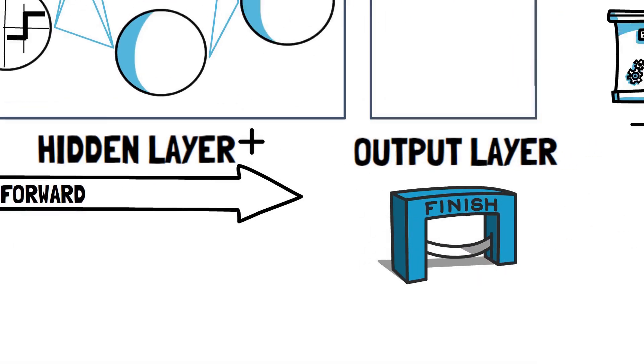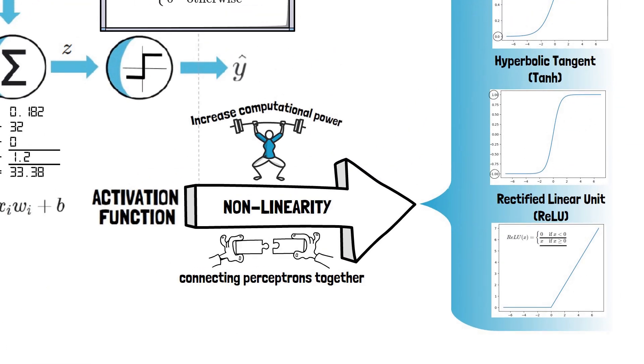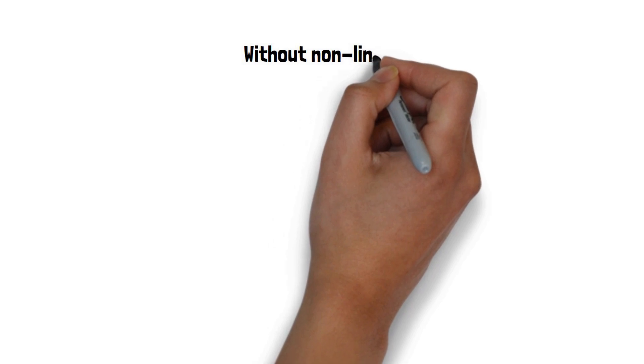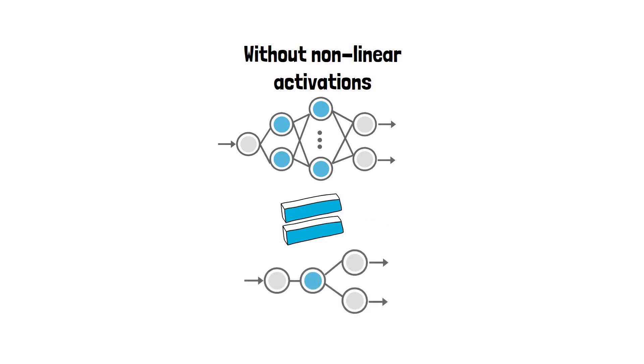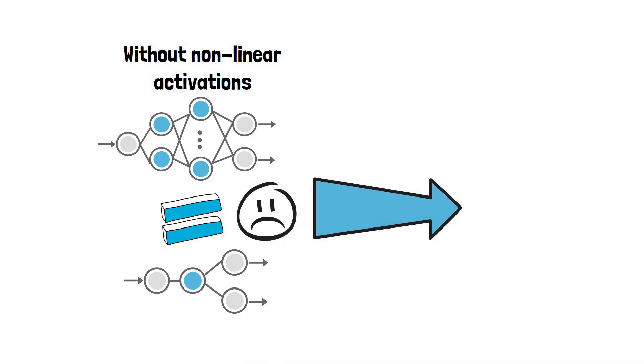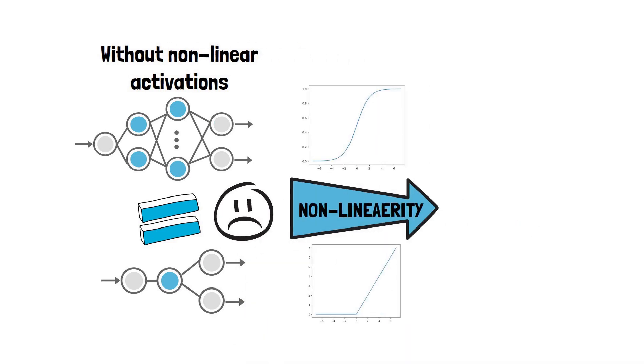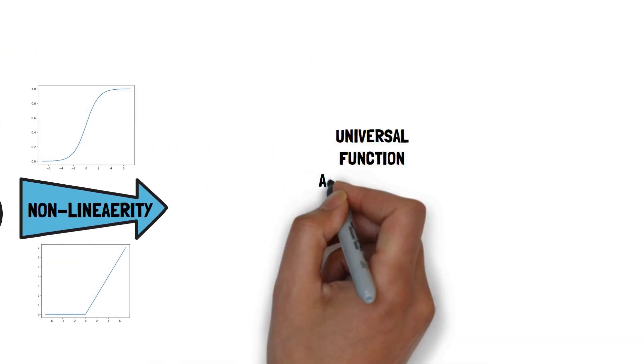The nonlinearity added by the activation functions is critical when connecting perceptrons into MLPs. One way to look at this is that without a nonlinear activation function, a neural network will only be as powerful as just one single layer perceptron. It does not matter how many layers it has. But MLPs with nonlinear activation functions become universal function approximators.